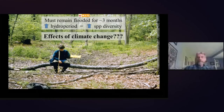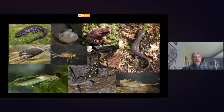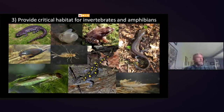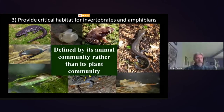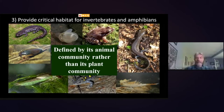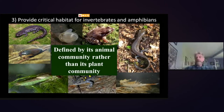Vernal pools provide critical habitat for a suite of invertebrates and amphibians that have come to depend on these temporary wetlands. It's one of the only ecosystems really defined by its animal community rather than its plant community. Other natural communities — a black spruce bog, a red maple swamp, a cattail marsh — are defined by the plants found there. But vernal pools have no characteristic plants; they're defined by their unique animal community.